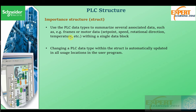Structures are used to summarize the parameters of a subsystem into a single data block — set points, speed, rotation, direction, temperature. Also, if we make a modification at the structure level, it automatically affects all subsystems using that structure type. We don't need to go individually to each subsystem to make adjustments.